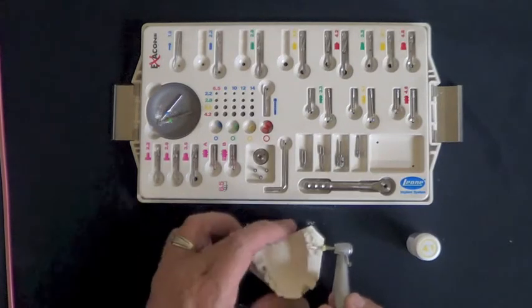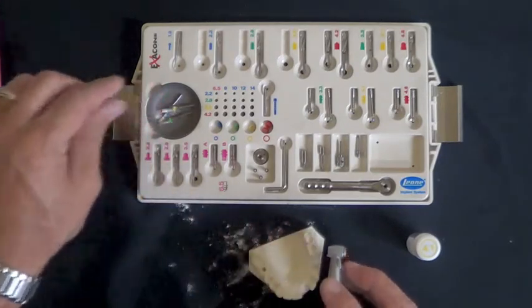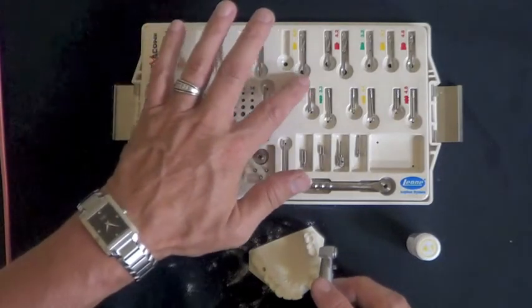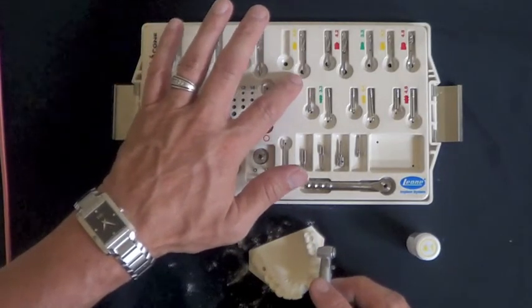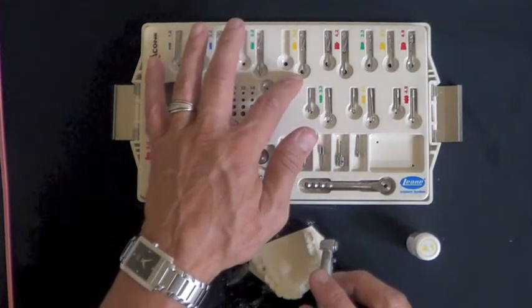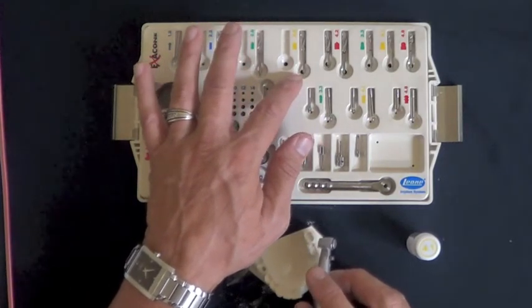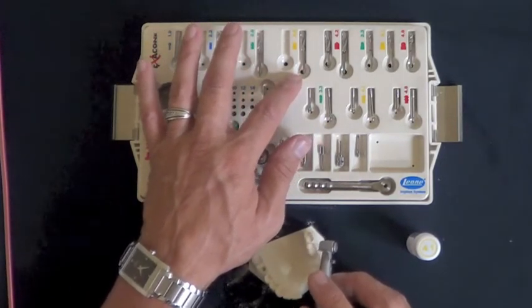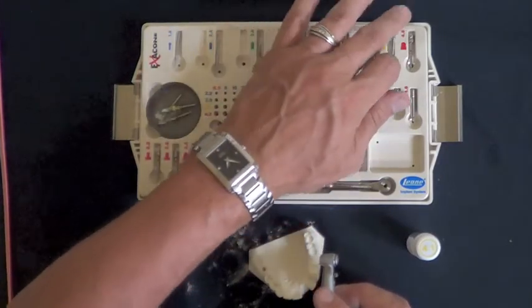All right, so once the osteotomy is done, following along from left to right, we're placing a 4.1 diameter implant, 10 millimeters in length. So the countersink that we would use is yellow in color.